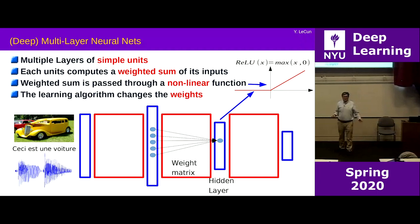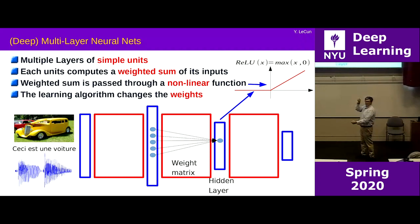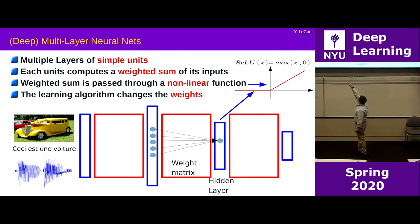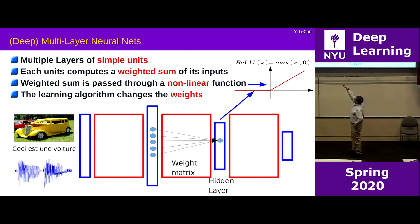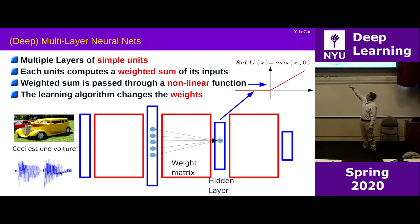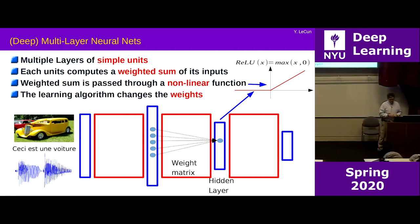Supervised learning in slightly more formal terms: compare the system's output with a target output using an objective function — a loss module that computes a distance or discrepancy. Compute the average of that cost function over the training set, which gives a scalar. You want to find parameter values that minimize this average error between the desired output and the actual output, averaged over the training set.